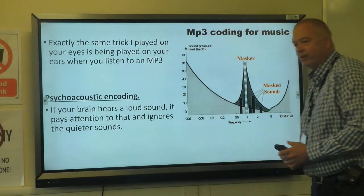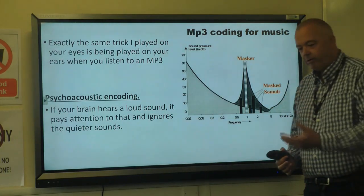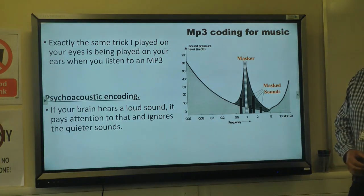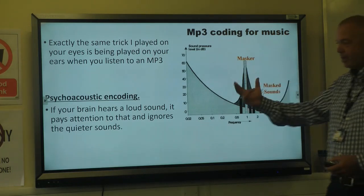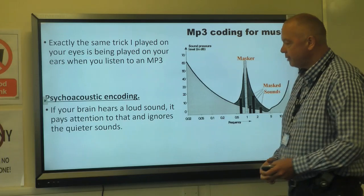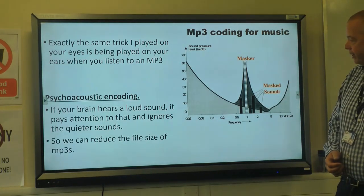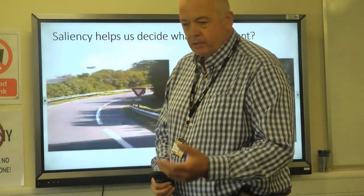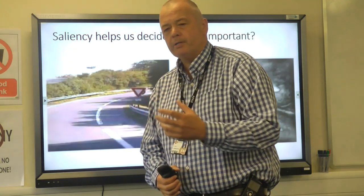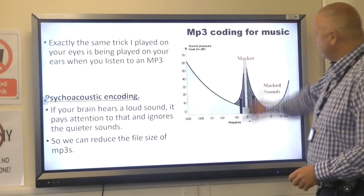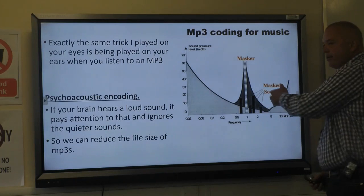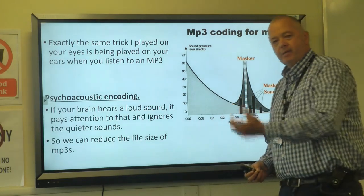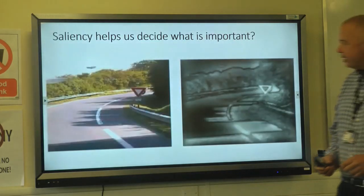The computer also needs to identify the important parts. In an MP3, it's not always the loudest noise we save — there are important parts called salient markers. These are the elements that matter most for understanding or navigating the content.